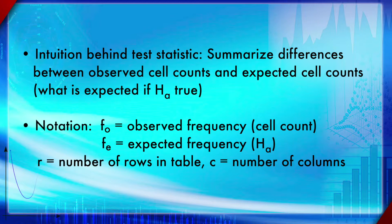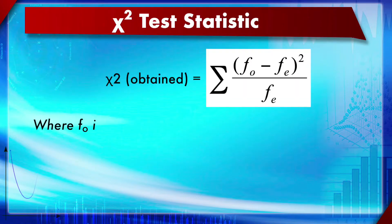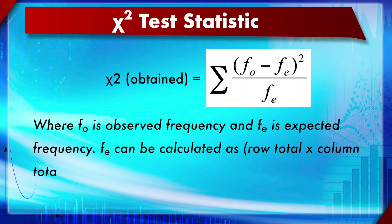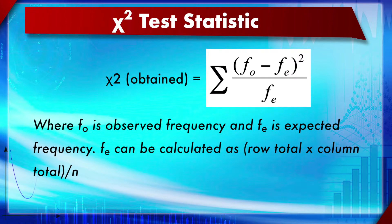The notation is: FO means observed frequency or cell count — what you actually observed. FE is the expected frequency, calculated from that observed frequency itself. R is the number of rows in the table and C is the number of columns, used to calculate the degree of freedom. The chi-square test statistic equation is: chi-square obtained = Σ(FO − FE)² / FE.